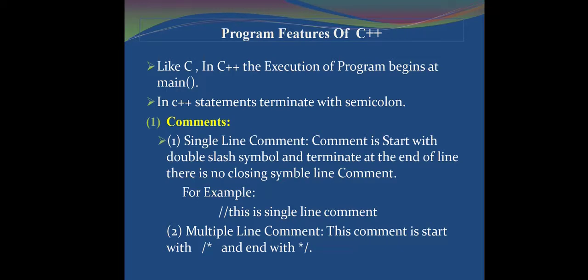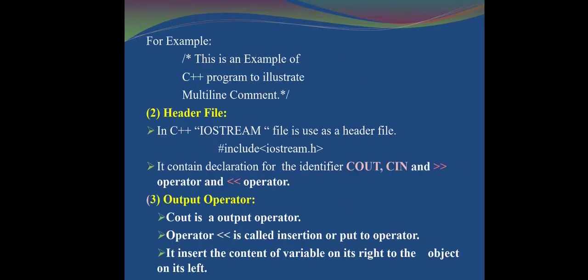The second type is the multi-line comment, which starts with slash-star and ends with star-slash. For header files, in C, we use stdio.h — the standard input-output header file — which contains the printf and scanf functions. In C++, we use iostream.h for input and output stream, which contains declarations for the identifiers cout and cin, and the insertion and extraction operators.